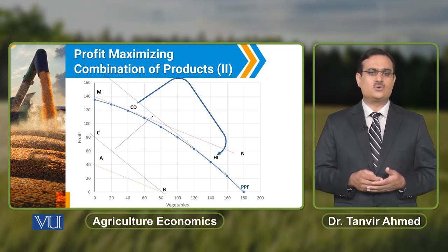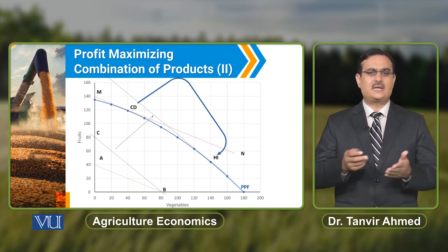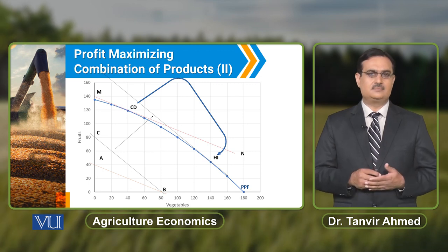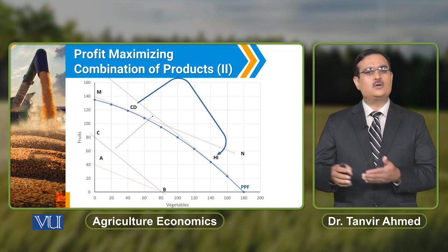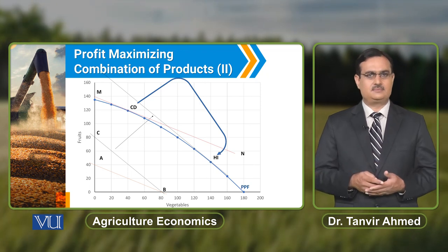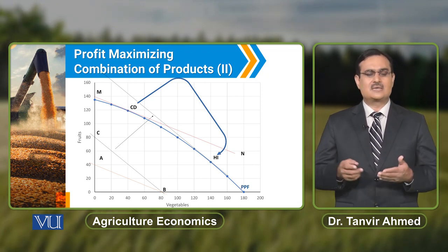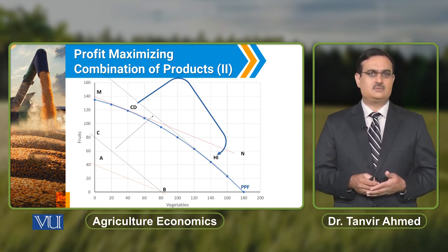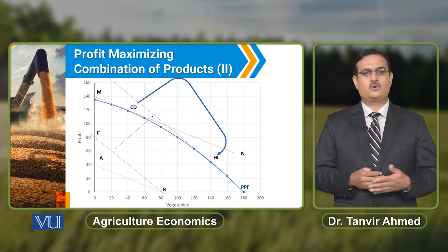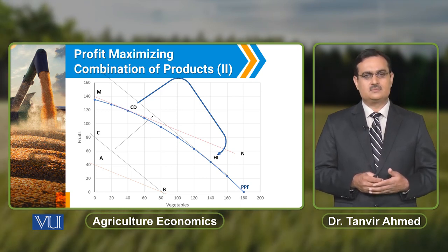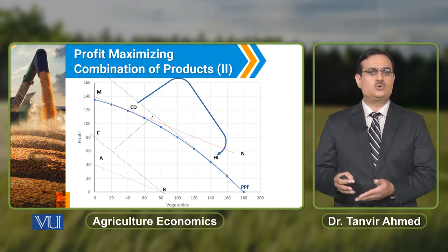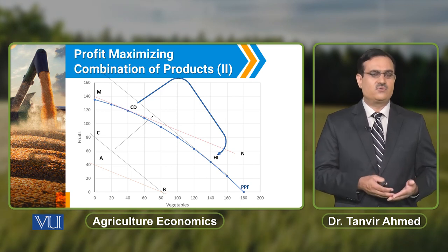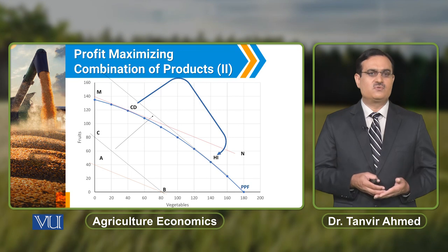When we shift the ISO revenue curve outward, it becomes tangent against combination HI. To maximize profit with reference to the original combination, the farmer has to increase the production of vegetables and decrease the production of fruits. This shuffling of resources is because of the decrease in the price of fruits.